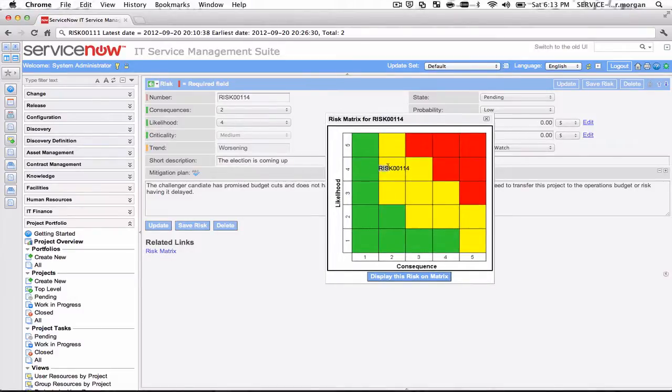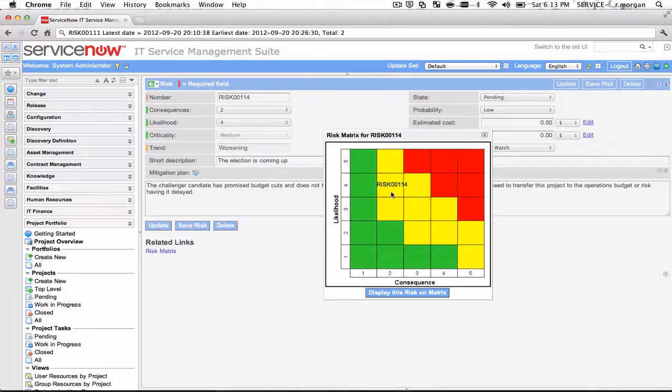I'd like to note that this risk in here is simply a label—we could have a big black X, we could have a count, we could have anything there that we'd like. I just thought that the risk ID might be appropriate to put there.